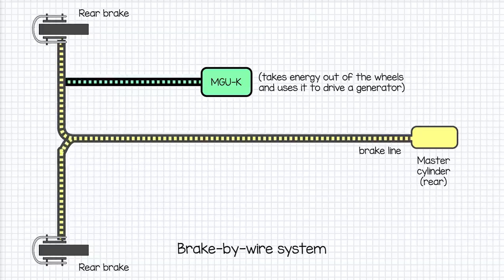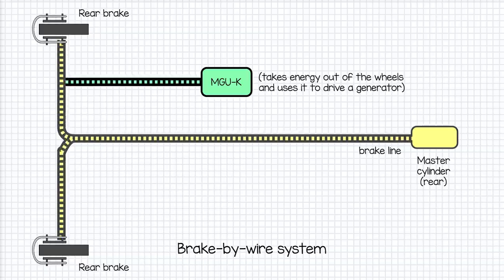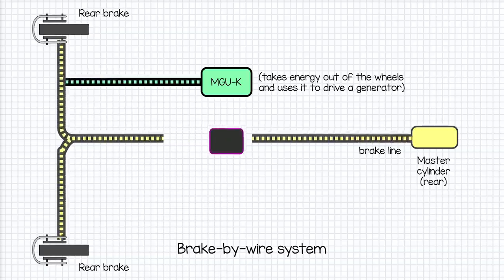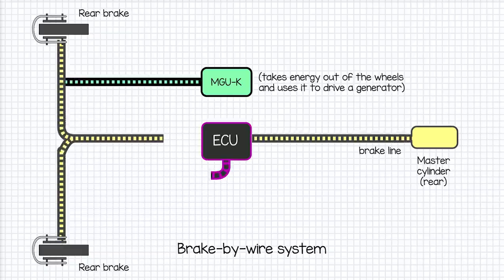A brake by wire system, sometimes obliviously referred to as BBW, means the physical action of the brake pedal is not directly attached to the physical action of the brake calipers. Instead, there's a computer in between telling the brakes what to do.